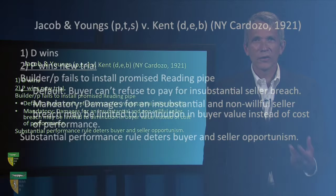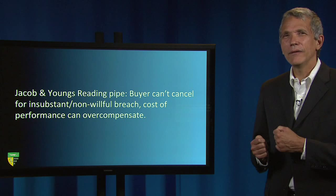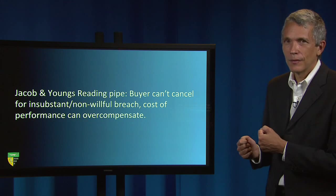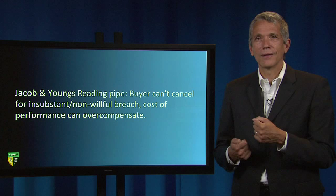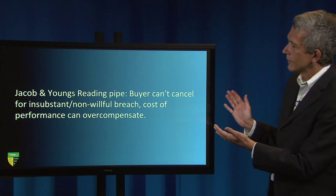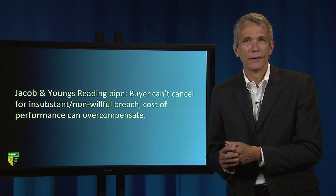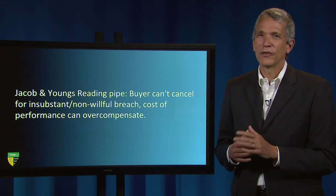My computer tells me this summary is just 65 words long. When it comes time to prepare for the final exam, you should condense this brief even further. I recommend for exam prep that you condense the initial brief down to something that is Twitter length — 140 characters — that summarizes the rules from the case. For example, I might say: 'Jacob and Young's Reading Pipe — buyer can't cancel for insubstantial non-willful breach — cost of performance can overcompensate,' which is just 122 svelte characters.